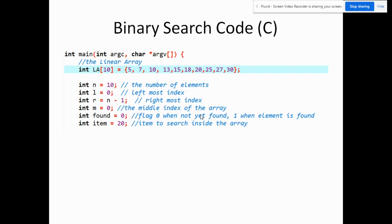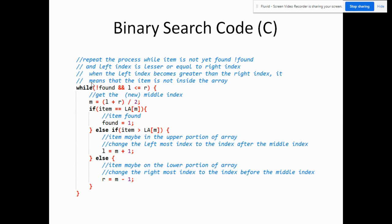Here is the binary search code written in C. We declare an array with 10 elements: 5, 7, 10, 13, 15, 18, and so on — the elements must be sorted. We have integer n equal to 10, the number of elements. l is equal to 0 (the leftmost index), r is equal to n minus 1, so r equals 9. Initially m is 0, found is 0 meaning the element hasn't been found yet, and the item we're searching for is 20.